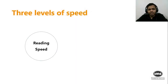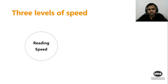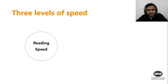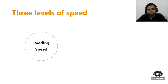The first level is reading speed. When you read any question — whether it is a quant question, logical reasoning puzzle, a DI set, or an RC — you have a reading speed. If your reading speed is slightly higher compared to others, you will be able to read the same question in less time, which buys you more time to actually solve those questions.